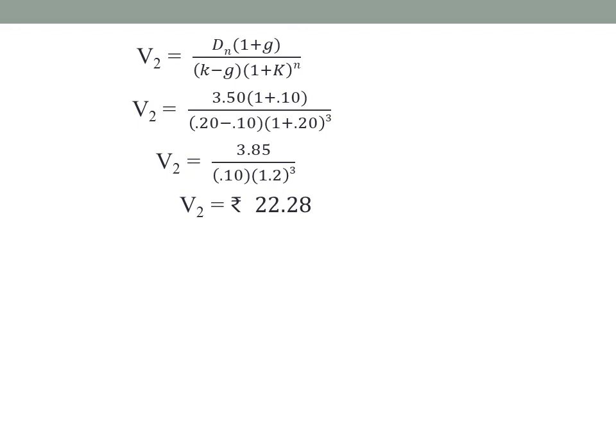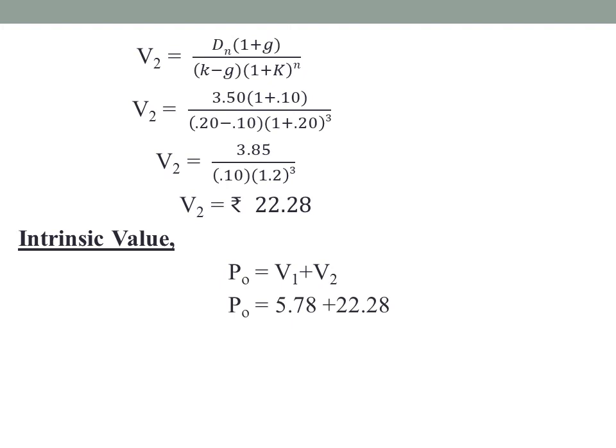Now that V1 and V2 are calculated, the actual intrinsic value is found using P0 equals V1 plus V2. So V1 plus V2 equals 5.78 plus 22.28, which equals Rs. 28.06. This is the actual intrinsic value or present value of the share under the multiple growth model.